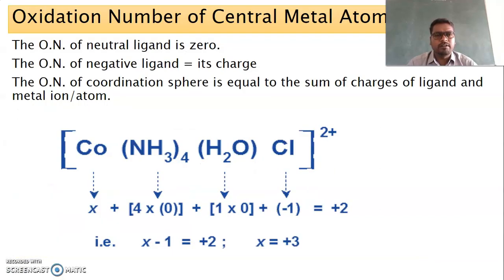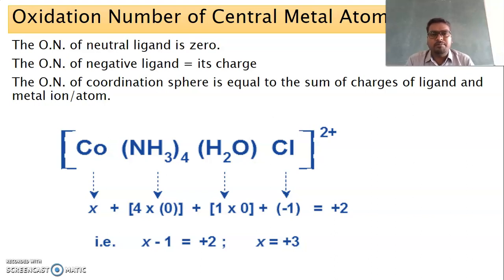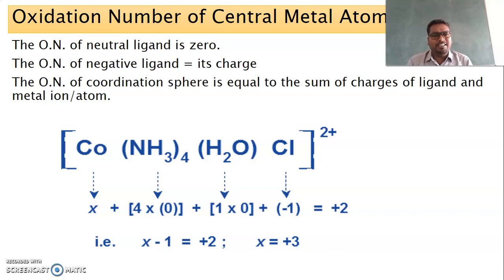Dear students, I am going to discuss one of the important concepts in coordination chemistry: the oxidation number of central metal ion. Transition metal ions form coordination complexes and possess variable oxidation states. Unlike S and P block elements which possess a definite oxidation state, D block elements do not have a single constant oxidation state.